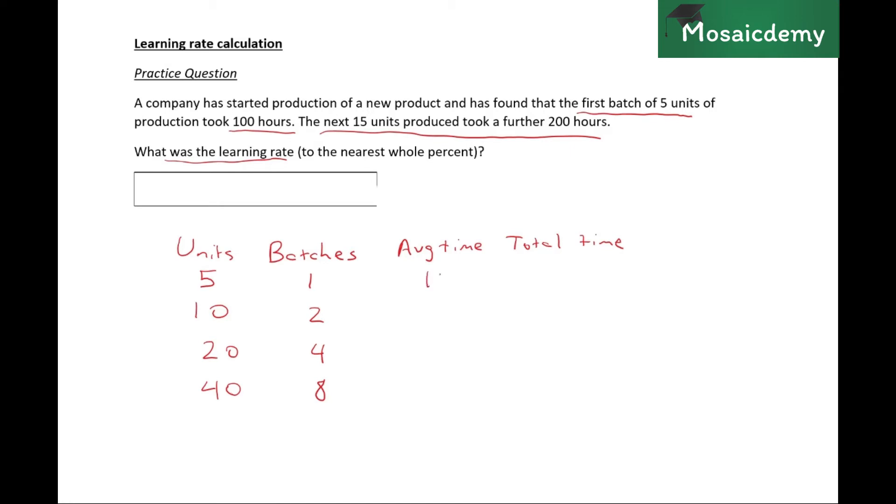So this is 100, and they're telling us that the next 15 units took a further 200 hours. So five plus 15 more units gives us 20. So to produce 20 units, the first five took 100 and the next 15 took a further 200. The total time taken for 20 units was 300, right? So this is what we have so far.